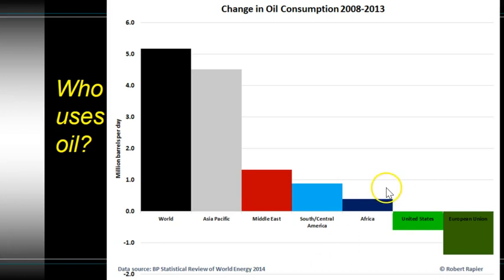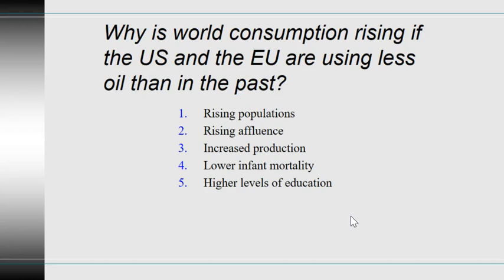Everybody uses oil for something. Interestingly, over the last ten years the United States and the European Union have started using less oil than in the past. However, overall world oil usage is up considerably. Why is world consumption rising if the US and EU are using less? The answer is rising affluence — you can have an increasing population without a proportional increase in oil demand, but rising affluence means consuming more products.